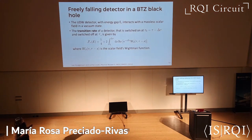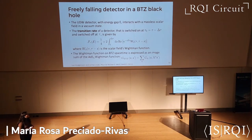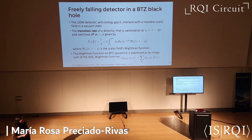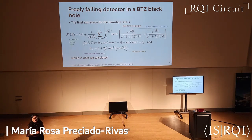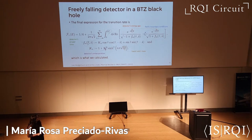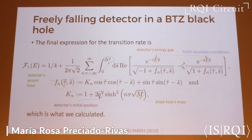They also consider that the detector has energy gap E and that it interacts with a massless scalar field in a vacuum state. This is the expression they found for the transition rate, which depends on the total detection time, the gap of the detector, and the Wightman function of the field. One of the reasons for calculating this response in BTZ spacetime is that we can write the Wightman function for the BTZ black hole as an image sum of the ADS-3 spacetime, taking into account the identifications. This is the final expression for the transition rate, and we can see that it depends in a non-trivial way on the detector's gap, its proper time, its initial position, the black hole's mass, and the boundary conditions of the field.